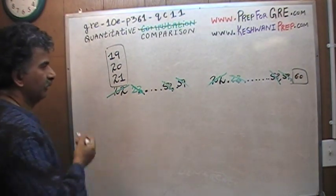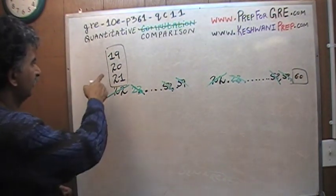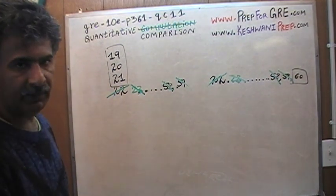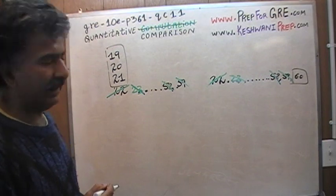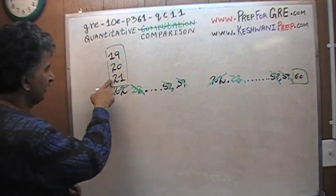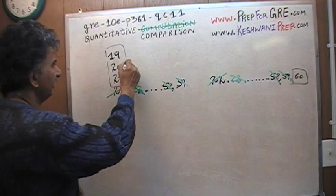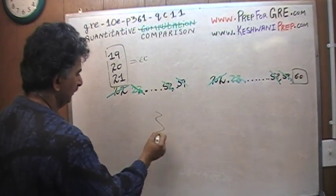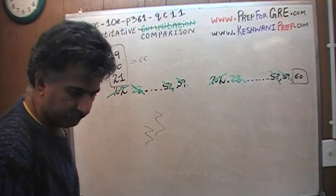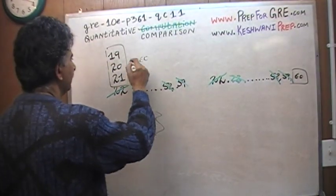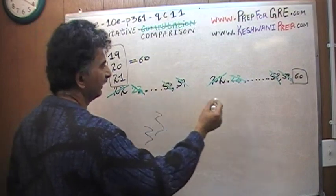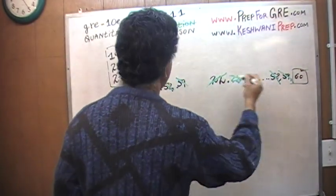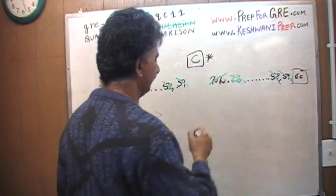19 plus 20 plus 21 equals 60 because 19 is one less than 20 and 21 is one more than 20. You see how lazy I am? I'm not even wasting my time adding them up. It's just 20 times 3 which is 60, exactly what we have here. Since 60 equals 60, the two columns are equal. The answer is C.